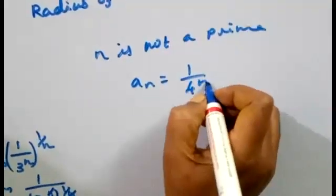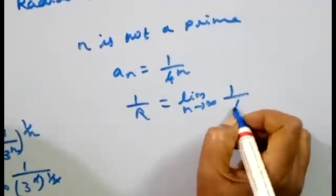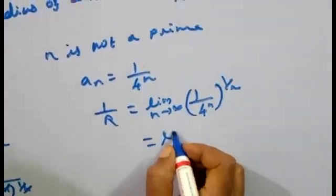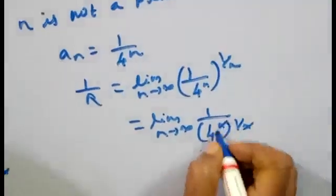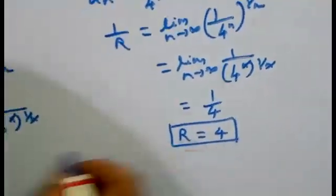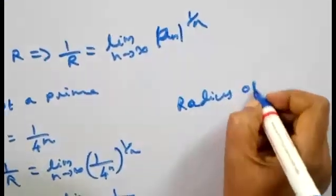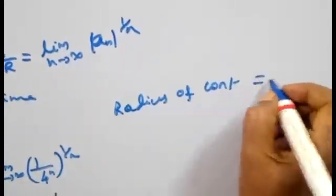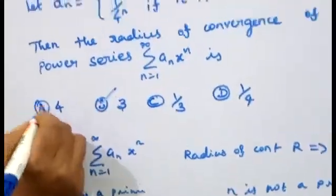Case 2: n is not a prime number. a_n equals (1/4)^n. Then 1/R equals the limit as n tends to infinity of [(1/4)^n]^(1/n). Applying the limit, 1/4 is constant, so R equals 4. The radius of convergence is the minimum of 3 and 4, which equals 3. So the correct answer is option B.